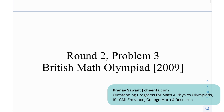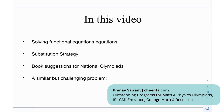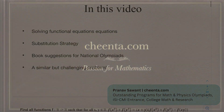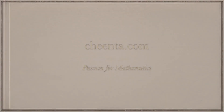This is Problem 3 from Round 2 of the British Math Olympiad in 2009. In this video, we're learning about functional equations and the substitution strategy. We also have book suggestions for national olympiads — USAMO, British Math Olympiad, etc. — and at the end, a similar but challenging problem.